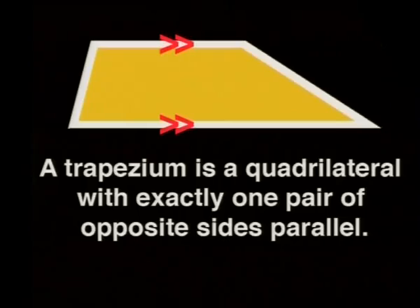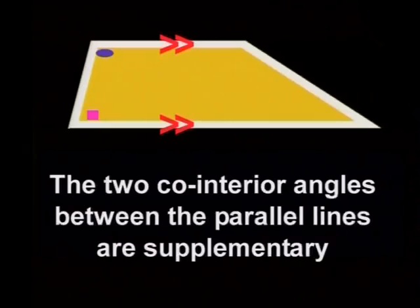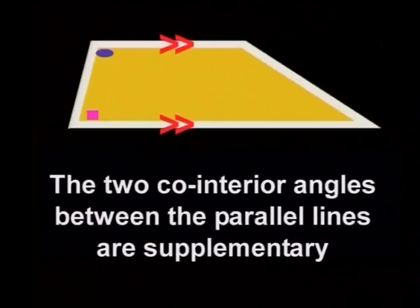Let's recap what we've learned so far about the trapezium. A trapezium is a quadrilateral with only one pair of opposite sides parallel, and the two co-interior angles between the parallel lines are supplementary, or add up to 180 degrees. And that's all! But there's a special kind of trapezium which we need to look at.